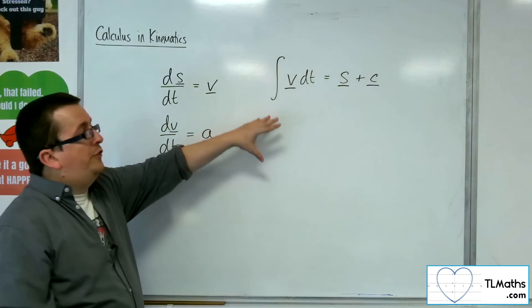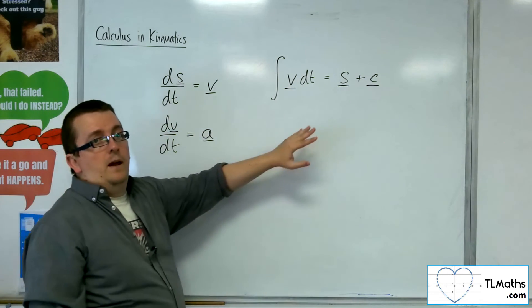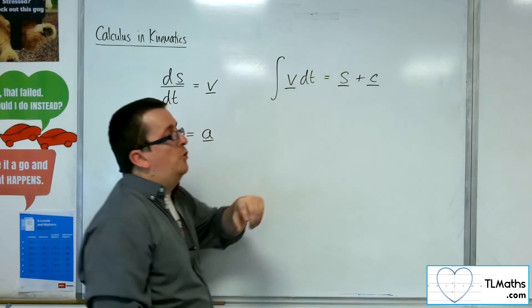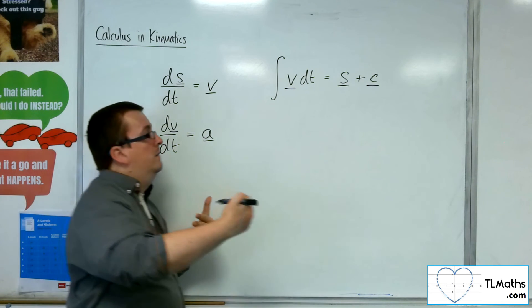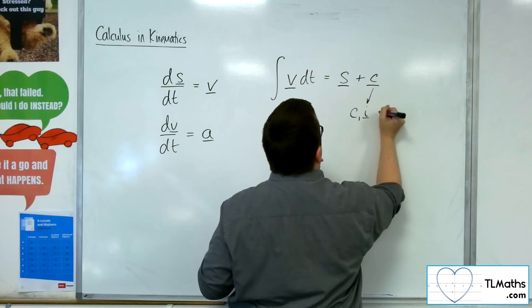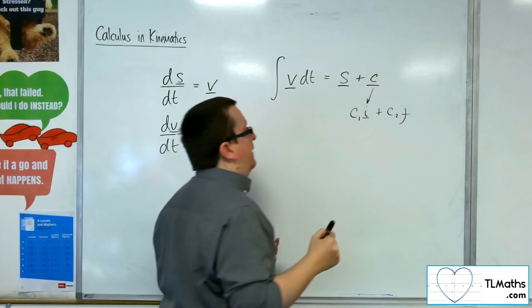So the c itself has got to be a vector. You can split that into a component form and have a c1i, so we could split that into c1i + c2j.